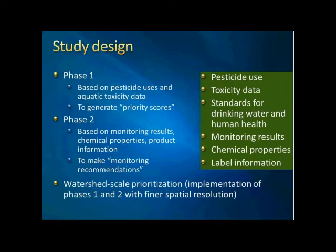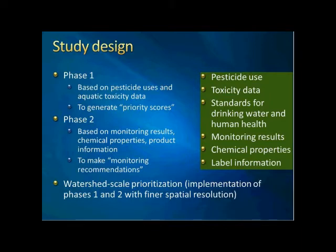Phase two is to refine the results from phase one and make monitoring recommendations for each prioritized pesticide, based on more information such as monitoring results, chemical properties, and label information. We also have a watershed-scale prioritization as a byproduct or bonus — it's not a real next phase of the study, but rather an implementation of phases one and two with finer spatial resolution. The original phase one and phase two prioritizations are based on PUR data aggregated at the county level. For urban pesticide uses, we only have county-level data, but for watershed-scale prioritization, the resolution is much finer — one by one mile sections.